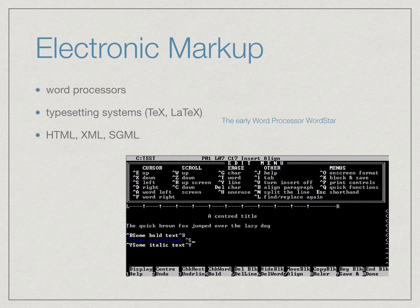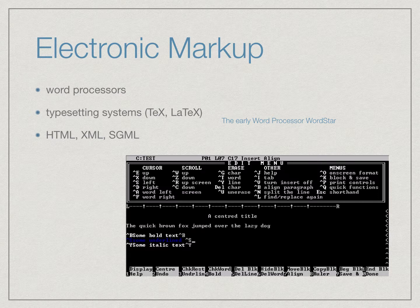The typesetting systems TeX and LaTeX, used heavily in the sciences, use a form of markup. The most common electronic markup languages, HTML, the language of the web, and XML, the extensible markup language, are based on SGML, the standard generalized markup language, which became an ISO standard in 1986. SGML was based on the generalized markup language, which was developed as early as 1969.